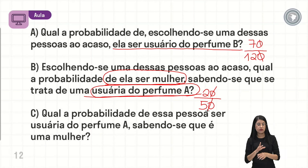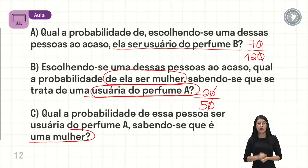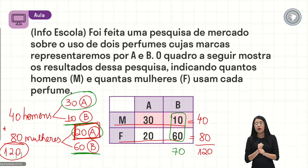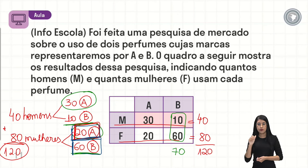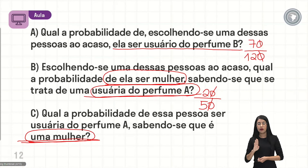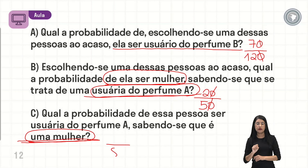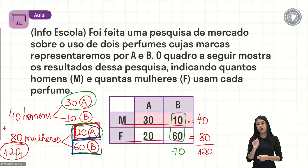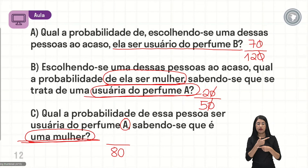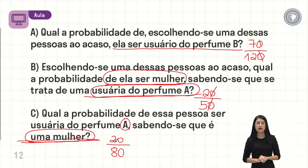Na letra C, ele diz: qual a probabilidade dessa pessoa ser usuária do perfume A, sabendo-se que é uma mulher? Agora é o contrário: sabendo que a pessoa é uma mulher, eu vou analisar só as mulheres. Quantas mulheres tem? Eu tenho 20 que gostam do perfume A e 60 que usam o perfume B. Então, 20 mais 60 vai dar 80. O espaço amostral que vou analisar é de 80. Dentre as 80 mulheres, quantas usam o perfume A? São 20. Então, a probabilidade — usuária do perfume A sendo que é mulher — é 20 sobre 80. A gente cancela aqui também, faz essa divisão e chega no resultado da questão.